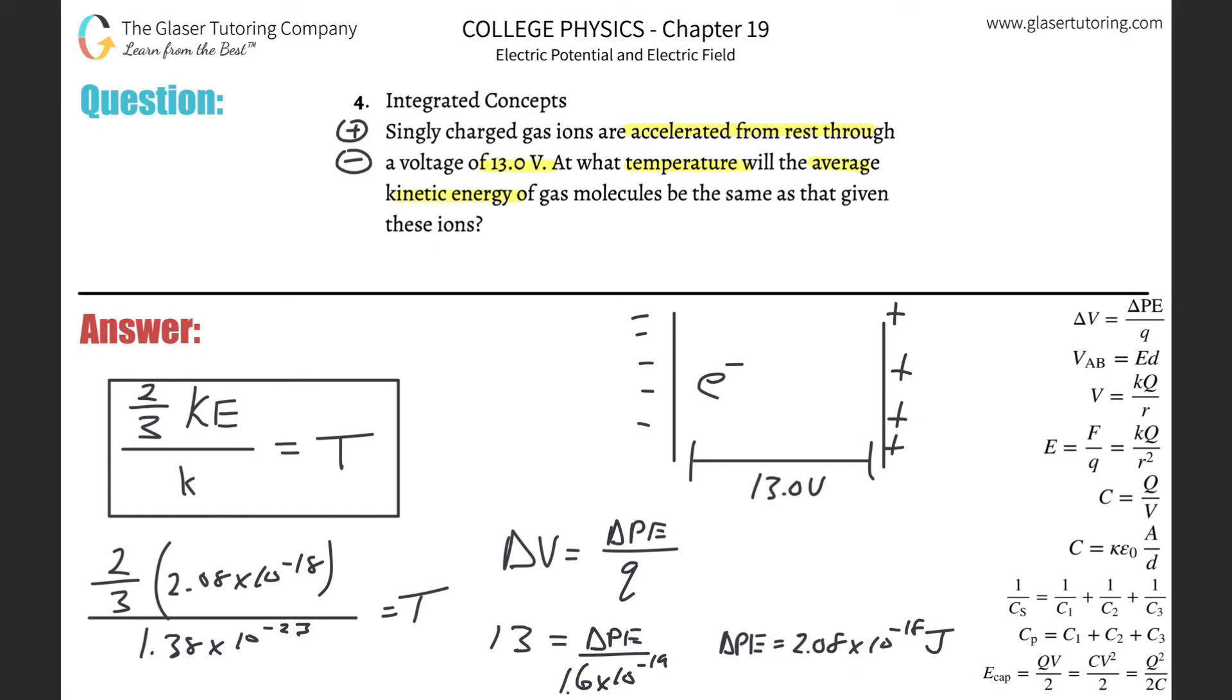Remember the T's in Kelvin. So take that value, multiply it by two-thirds, and then divide it by 1.38 times 10 to the minus 23.